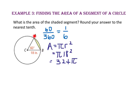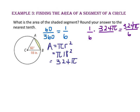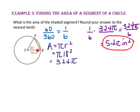The area of sector ACB is one-sixth of 324π. So 324π divided by 6 is 54π — the area of the sector is 54π square inches. Now we need to find the area of triangle ACB. The area of a triangle is one-half base times height. The base equals the radius, which is 18 inches, but we need to find the height.